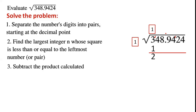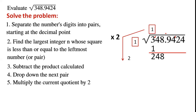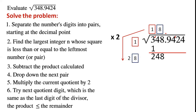Next, we subtract the product calculated: 3 minus 1 is 2. Then we drop down the next pair and write 48 after 2. Now we multiply the current quotient by 2: 1 times 2 is 2. So we write 2 here.